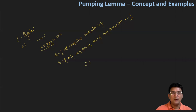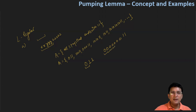If I pick the string 011 only, and pick one part of it — let's say this is zero only — and repeat zero many times, say 7 times, I get 0000000 followed by 11. So what I did is pump the zero part many times in this string. And even then, whatever string I got — let's call it s1 — is part of language A.